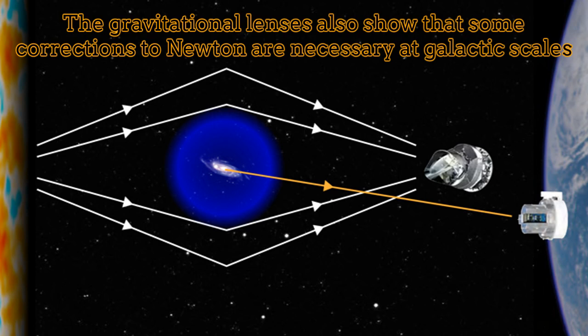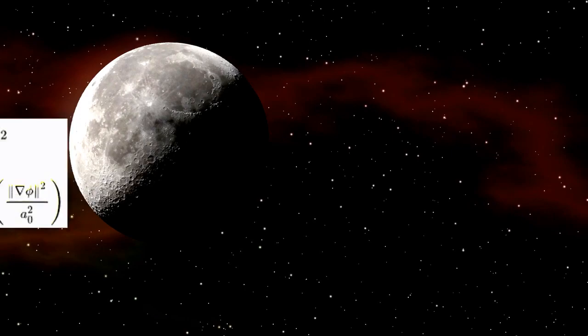This evidence, together with the fact that the galaxies are rotating so fast — faster than what they should in agreement with the observed matter — is what makes honest scientists assume the existence of dark matter, some hypothetical matter which only interacts via gravitational interaction.